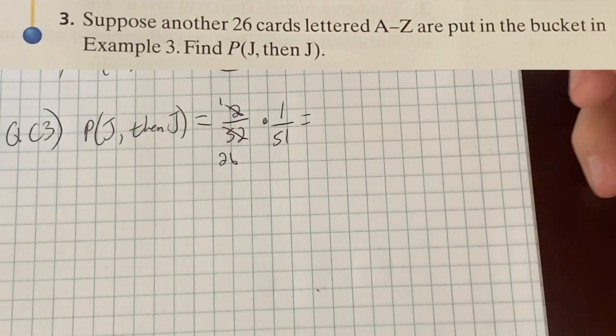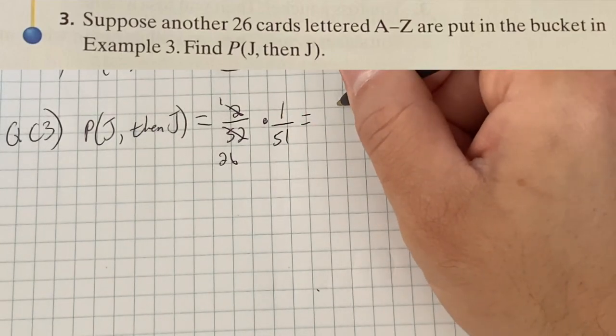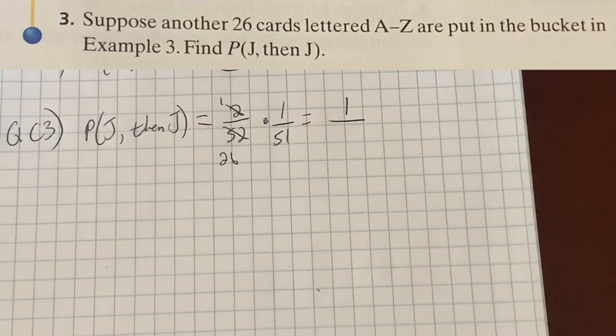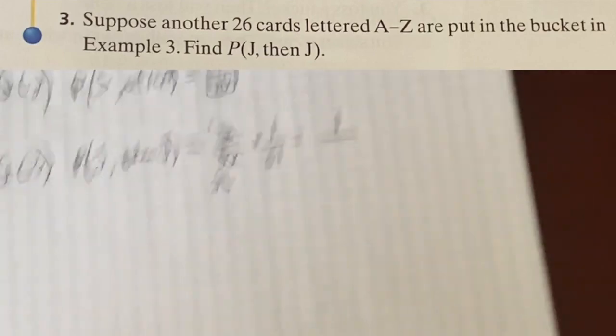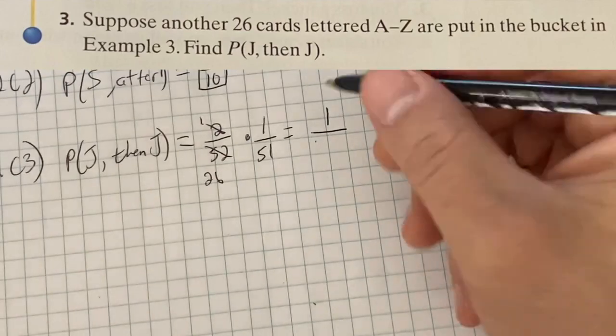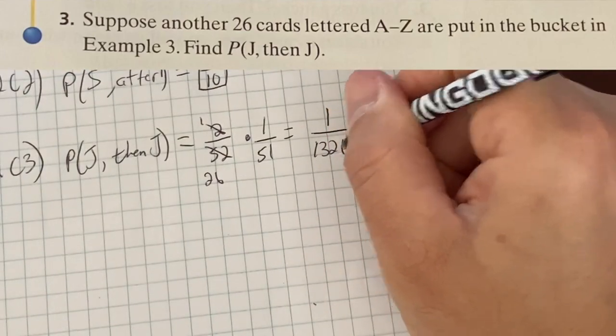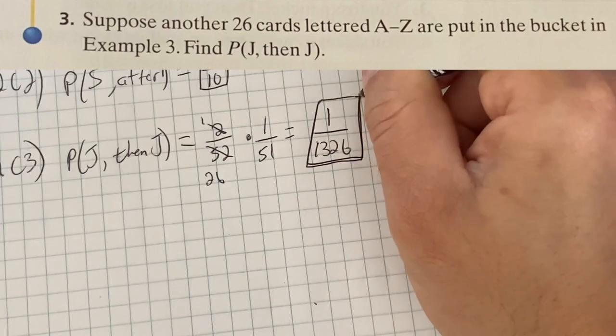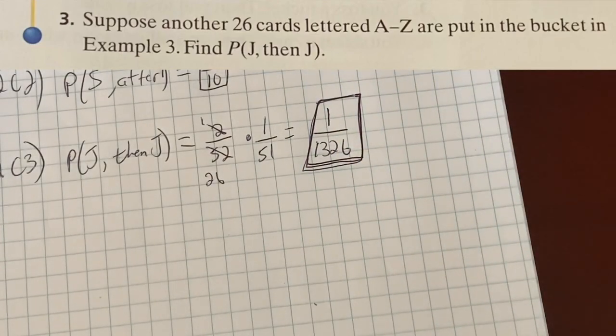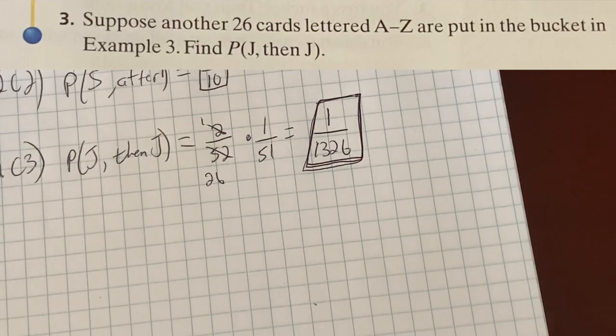So we have to multiply these. Now I always like to simplify before I multiply. 2 over 52 will simplify to 1 over 26. And then you will multiply straight across on the top, 1 times 1 is 1. On the bottom, on your calculator, 26 times 51, I'm actually going to have to look that up because I can't do that in my head, 1,326. Is that going to happen? Not all that often. No. Only one time out of 1,326 times should you expect to pull out both J's. Very, very, very, very, very, very unlikely to happen.